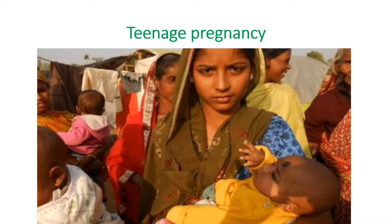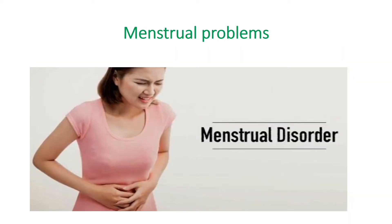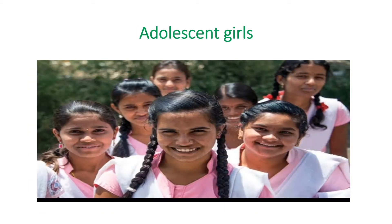Anemia is frequently seen in teenage pregnancies, which is a common problem in India as there are many communities who marry girls below the age of 18 years. A very common cause is menstrual problems, which include polymenorrhagia (too frequent menstruation), metrorrhagia (irregular non-menstrual bleeding occurring between menstrual periods), and post-menopausal bleeding where bleeding occurs more than one year after the normal menstrual period at menopause. Adolescent girls are at the highest risk of developing anemia because of menarche and decreased iron intake due to peer pressures and lack of healthy lifestyles.